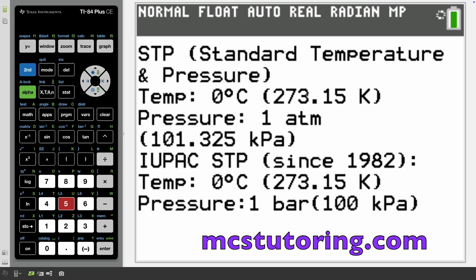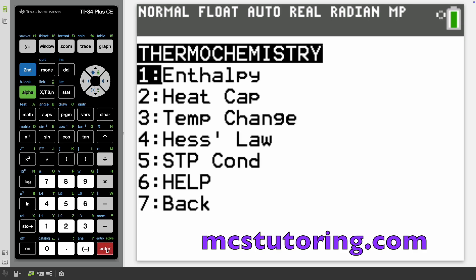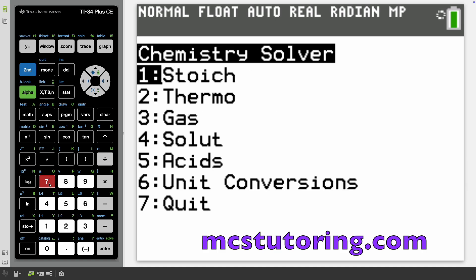We got STP conditions. Standard temperature and pressure: zero degrees Celsius, which is 273.15 Kelvin. Pressure is 1 ATM, which is 101.325 kilopascals. IUPAC STP since 1982. If you've got an old person like myself born before 1982, I remember when IUPAC STP was different. But for now, it's after 1982. Temperature zero degrees Celsius, 273.15 Kelvin. Pressure is 1 bar, otherwise known as 100 kilopascals. I'm more of a math guy. I might be physics adjacent, but I'm far from chemistry. That was my dad's domain, chemical engineer.